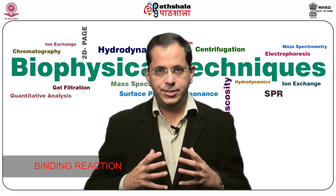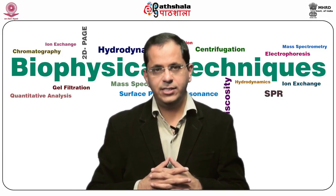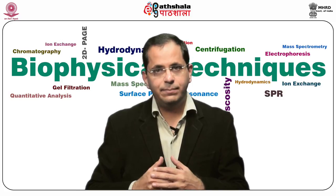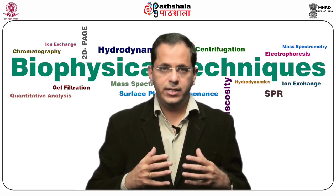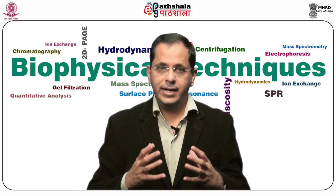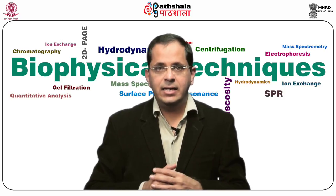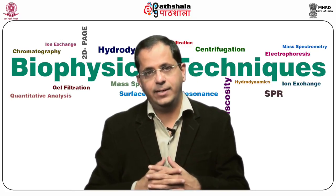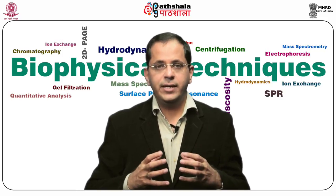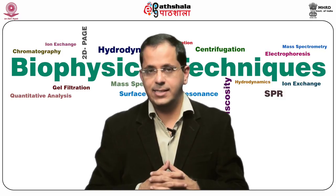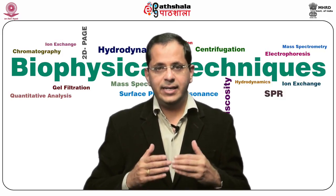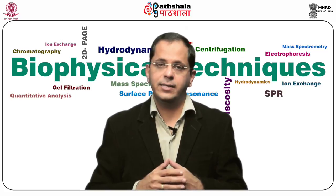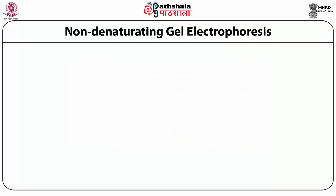For the binding reaction in EMSA: first, mix all components except the labeled probe in a vial — this includes the protein sample, the binding buffer, and poly(dI-dC), which is added as a competitor for non-specific DNA binding protein. Incubate this mixture for 20 minutes at 4 degrees centigrade. The labeled DNA probe is then added and incubated at room temperature for an additional 20 minutes. This is followed by non-denaturing gel electrophoresis.